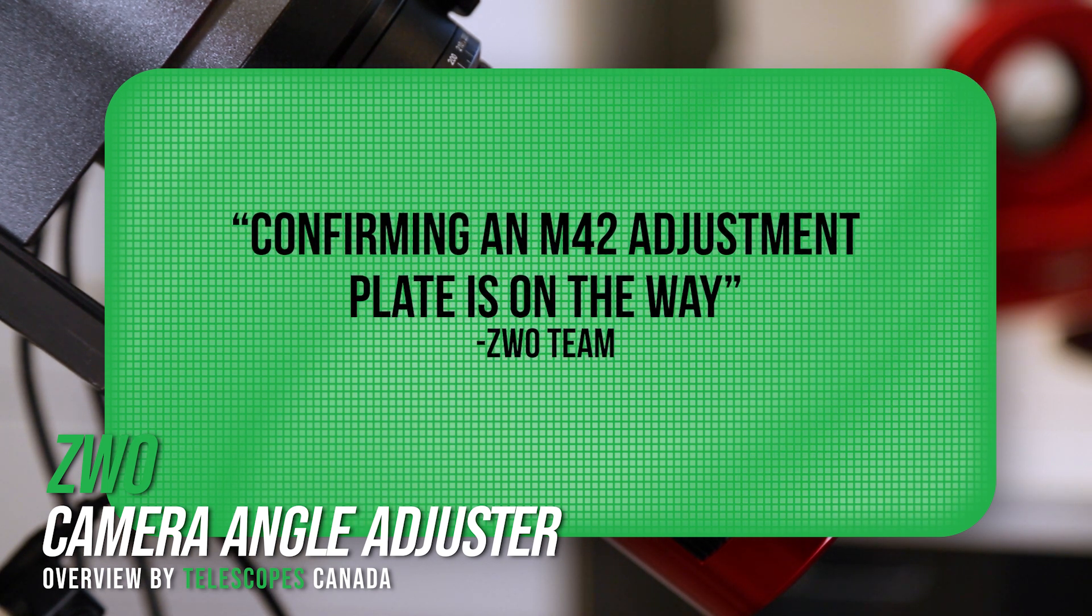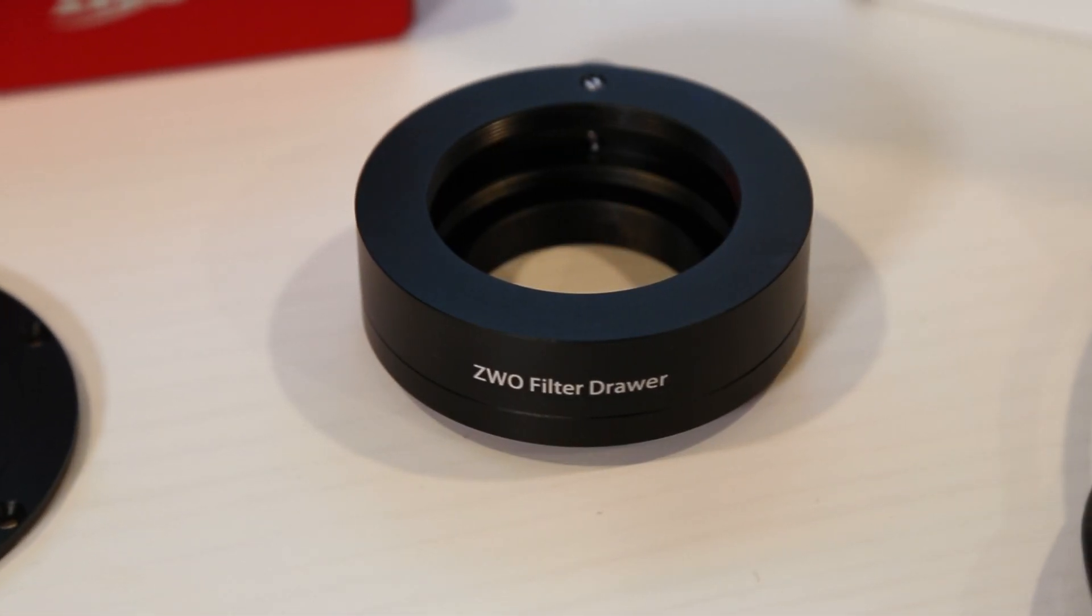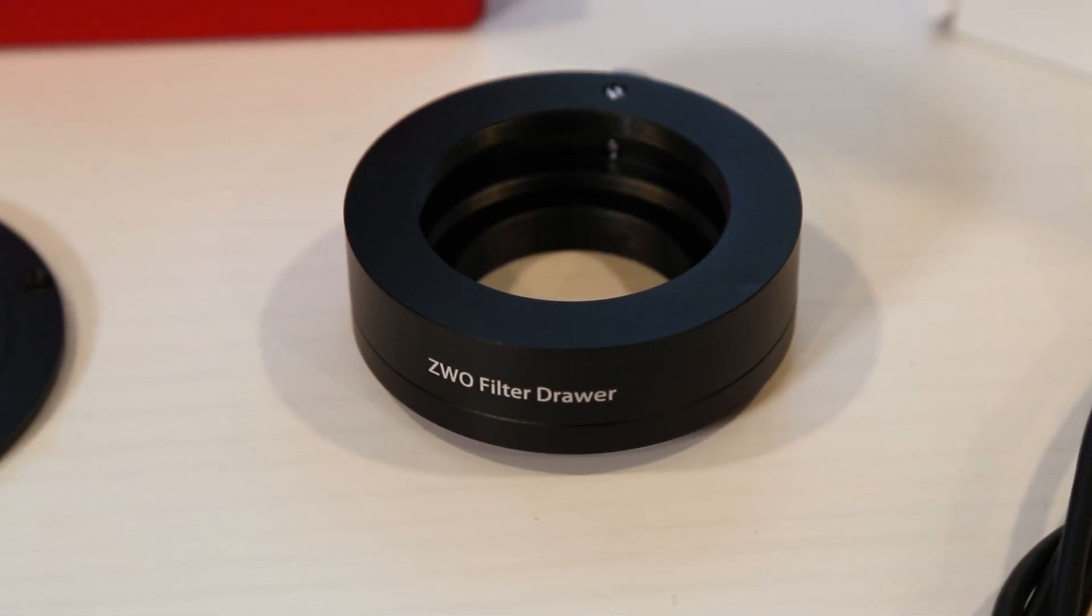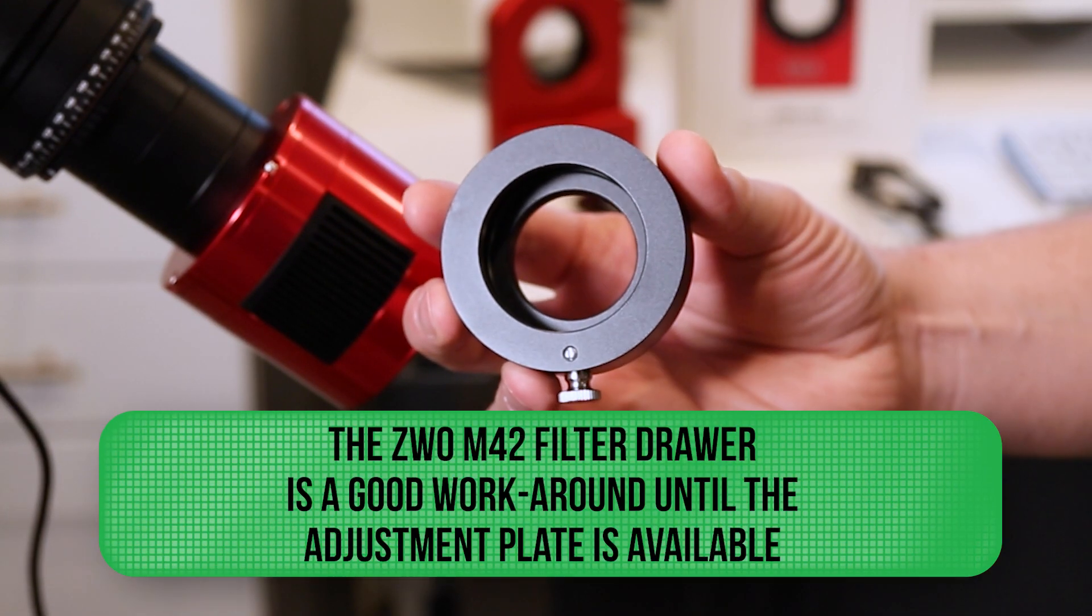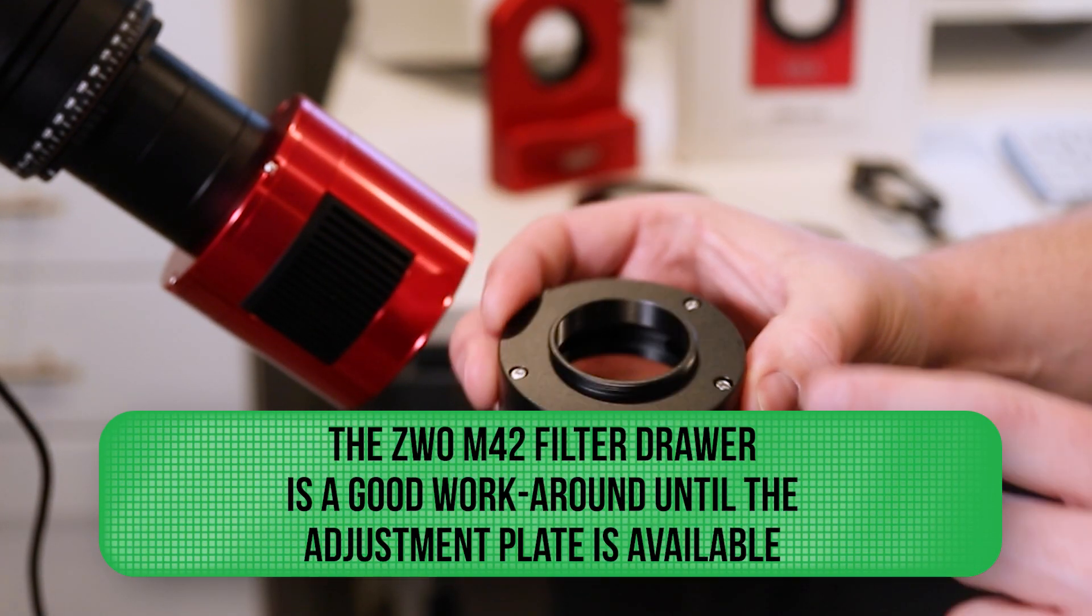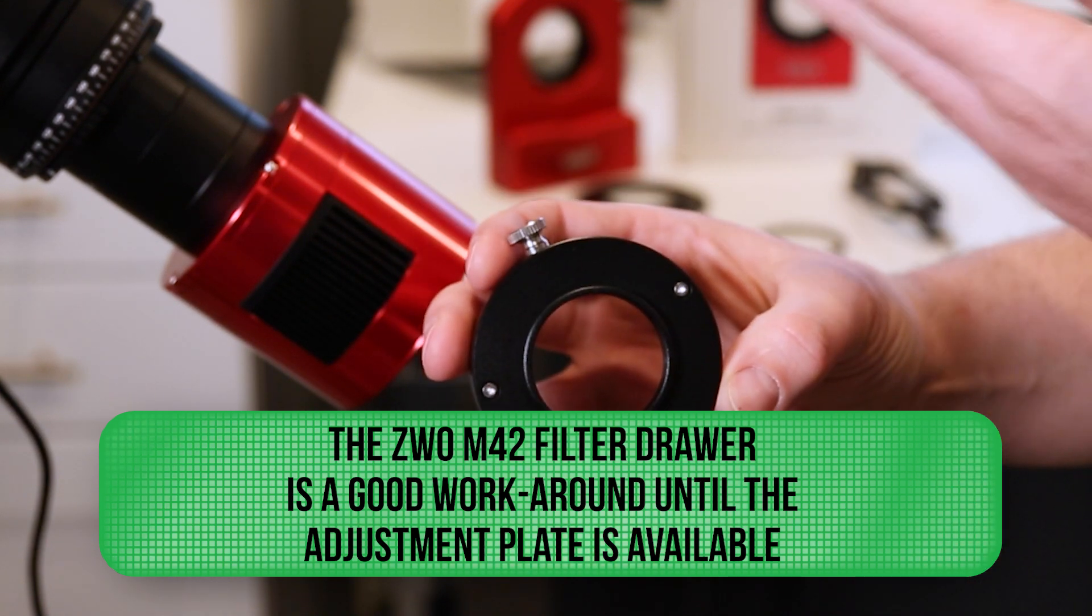In the meantime, the best solution that we could come up with is to use the ZWO M42 filter drawer. This has an M48 connection on this side, so you can put that towards the CAA, and then this has an M42 connection on this side, which you can now attach your camera to.